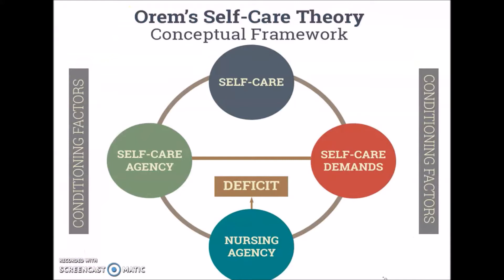This is an overview of Orem's self-care theory. It includes self-care, self-care demand, self-care agency, and nursing agency. When there is a deficit in the self-care agency relative to the self-care demand, the nursing agency must step in to meet the self-care needs of the person.